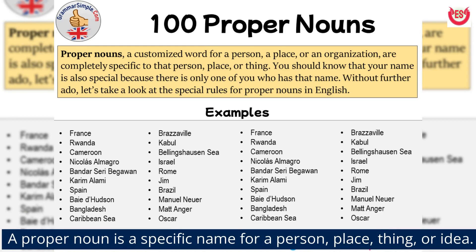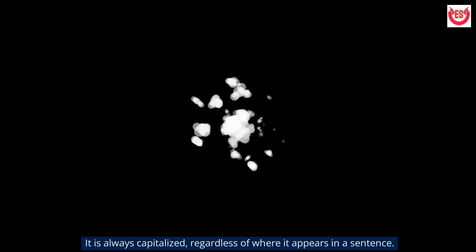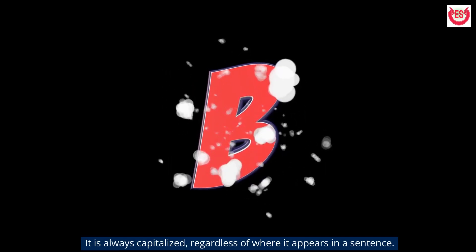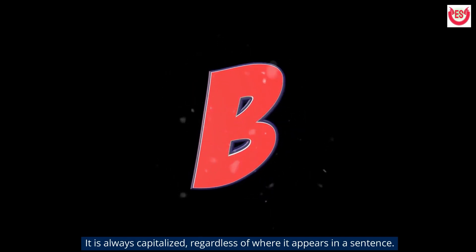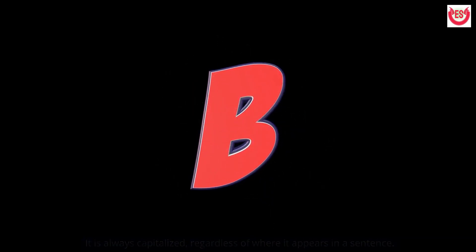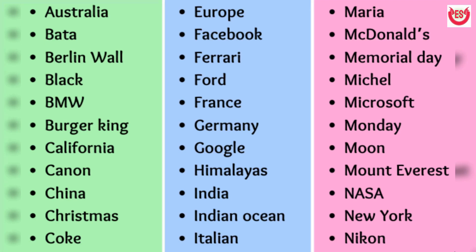A proper noun is a specific name for a person, place, thing, or idea. It is always capitalized, regardless of where it appears in a sentence. Here are some examples of proper nouns: Australia, Barter, Berlin Wall, BMW, Burger King, California, Cannon, China, Christmas, Coke, and so on.